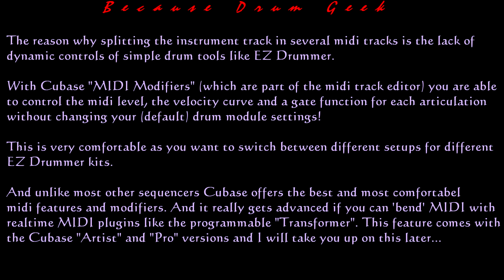The reason for splitting the instrument track into several MIDI tracks is the lack of dynamic controls of simple drum tools like EZ Drummer. With Cubase MIDI modifiers, which are part of the MIDI track editor, you are able to control the MIDI level, the velocity curve, and a gate function for each articulation.